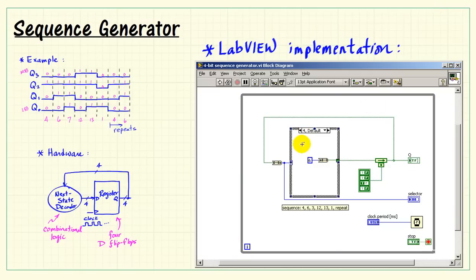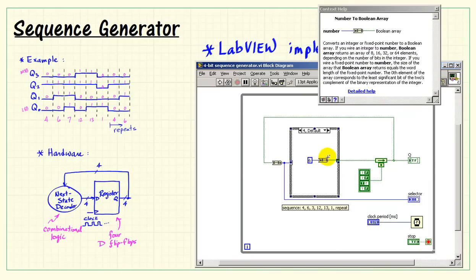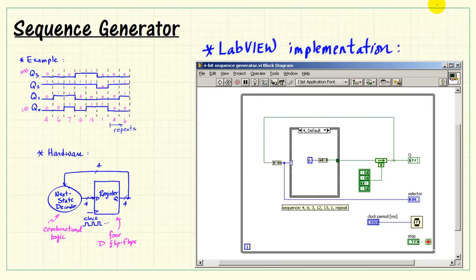And for our purposes, we can think of the case structure as implementing the complete combinational logic of the next state decoder. Inside the case structure, I'm using the number to Boolean array. Now, when the present value is 6, as selected by the case selector, we are supposed to be generating the value 7. In this particular VI, I have just a slight change where I'm using 3. That could just as easily have been made as 7.